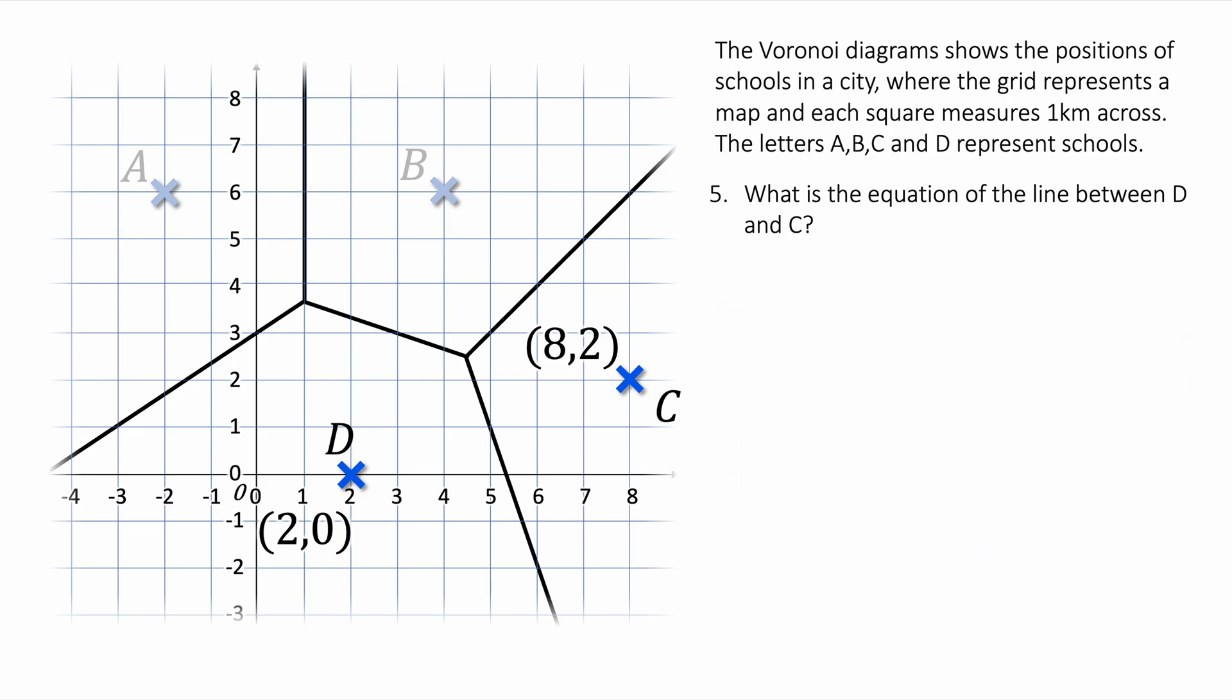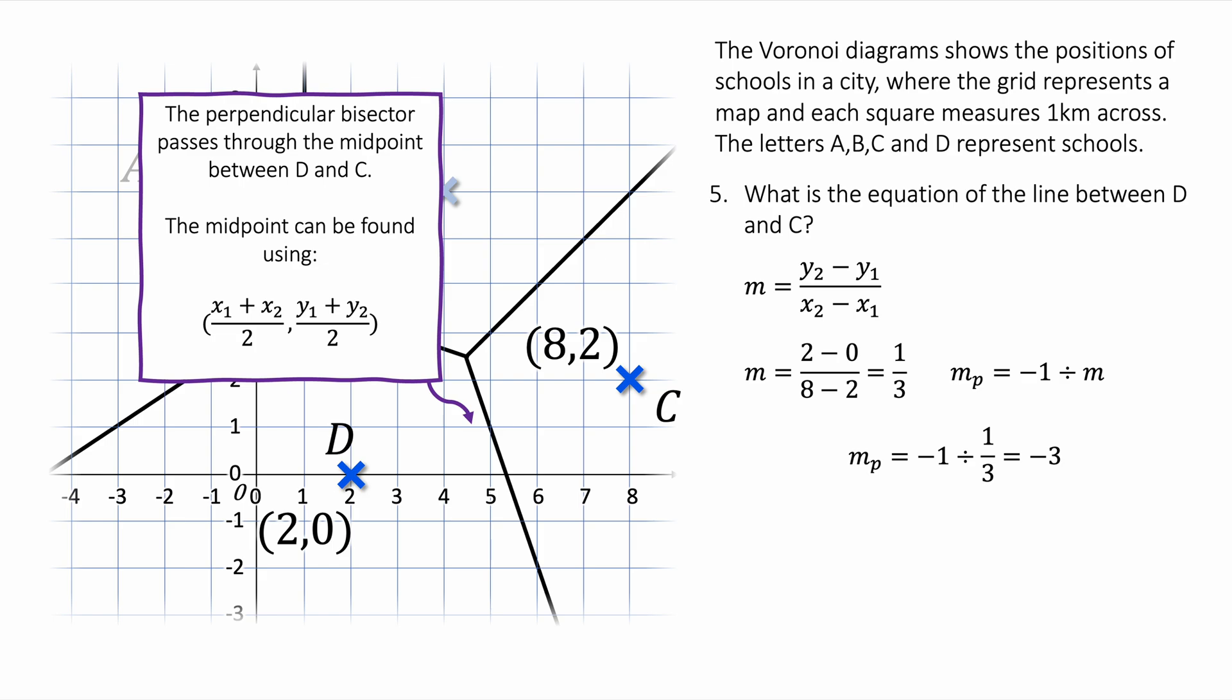The first thing we're going to do is find the gradient between these two coordinates. I'm going to substitute the coordinates in like that. When I turn into a calculator I get a value of one-third. Now I'm going to do the perpendicular gradient by doing minus one divided by that gradient. Minus one divided by a third is minus three. So the gradient of my line is minus three. Therefore it's going to be y equals minus three x plus c. Now I have to think about the midpoint.